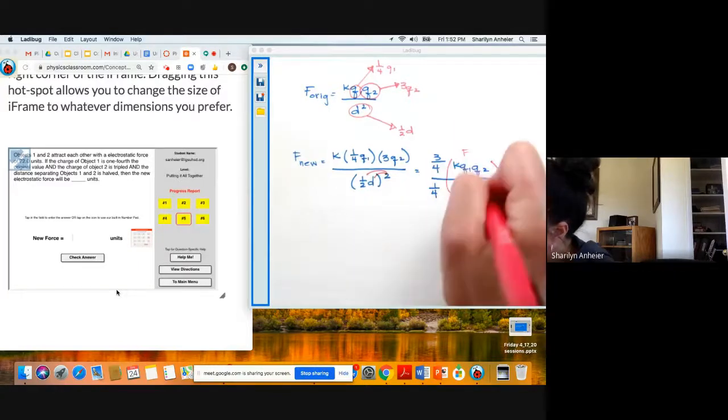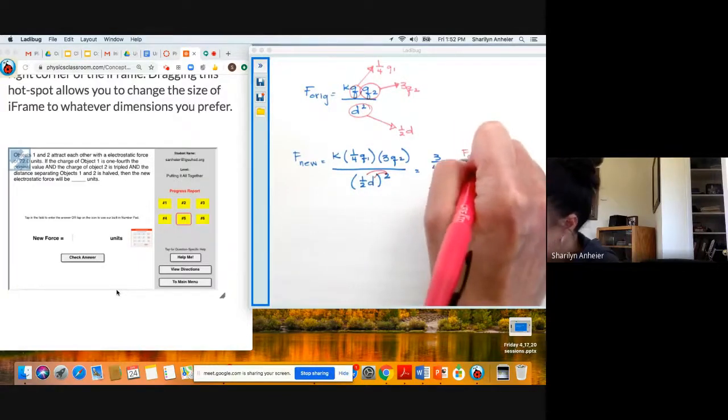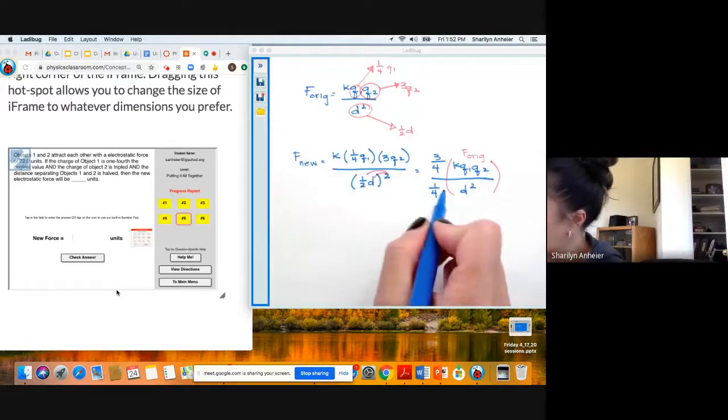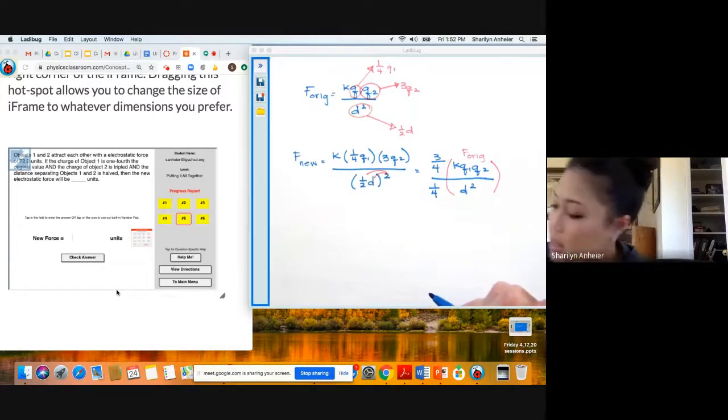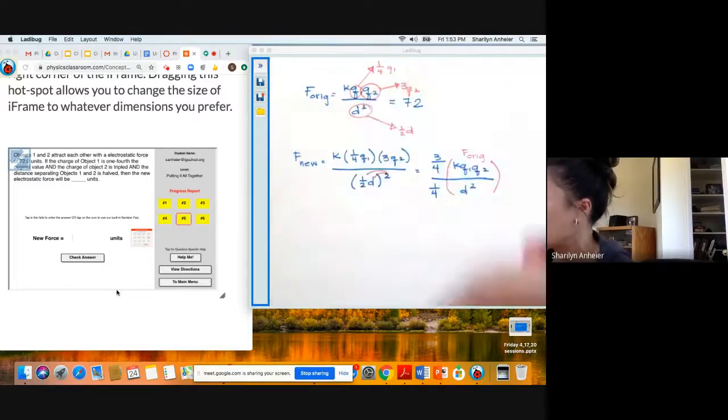So right here is my F original. And because it's actually giving me the value of that F original, it tells me it's 72. I forgot to write that down. I can use that value in this equation.